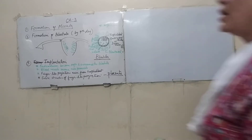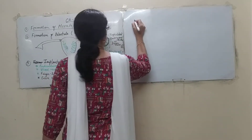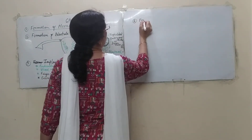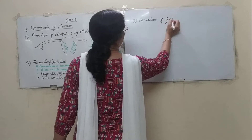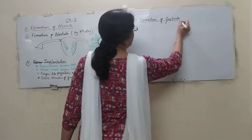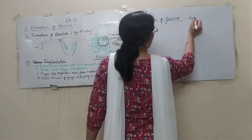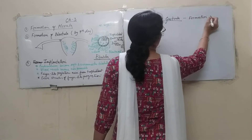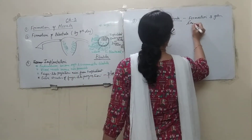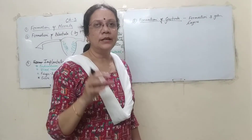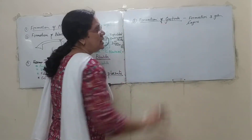Starting with topic number four: formation of the gastrula. Gastrula refers to the formation of three germ layers. The three germ layers are the ectoderm, mesoderm, and endoderm.